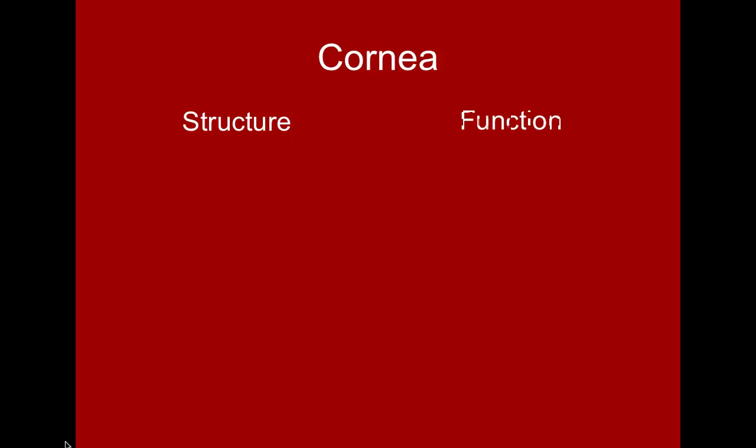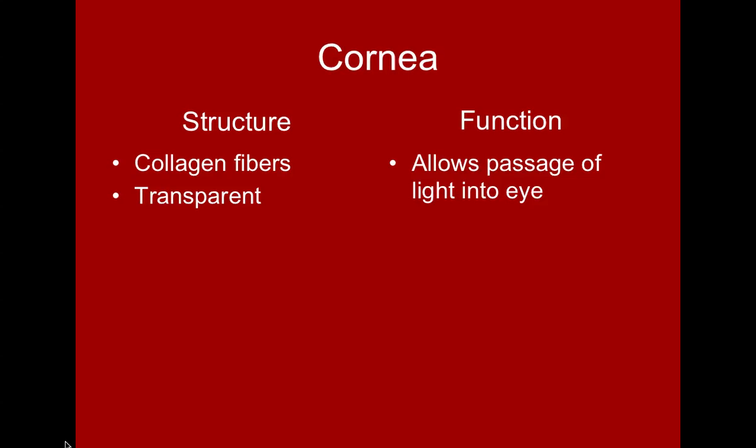The cornea is made up of collagen fibers arranged so that they are transparent, because it allows passage of light into the eye. The combination of the sclera and the cornea make up the complete outer layer of the eye. The sclera is white and opaque so light can't pass through it — keeping dark areas of the eye dark — while the cornea allows light to enter so we can see.